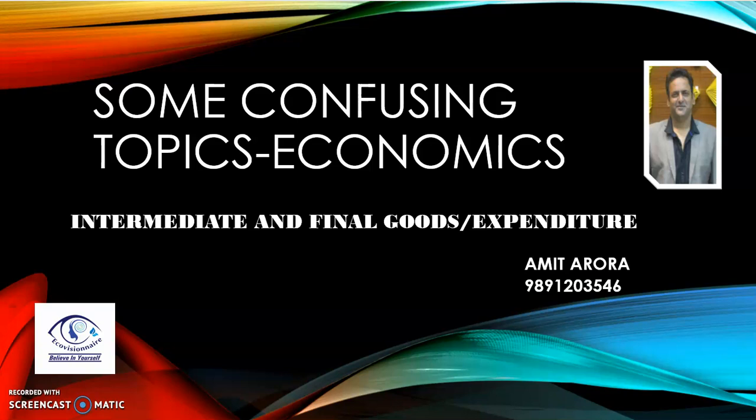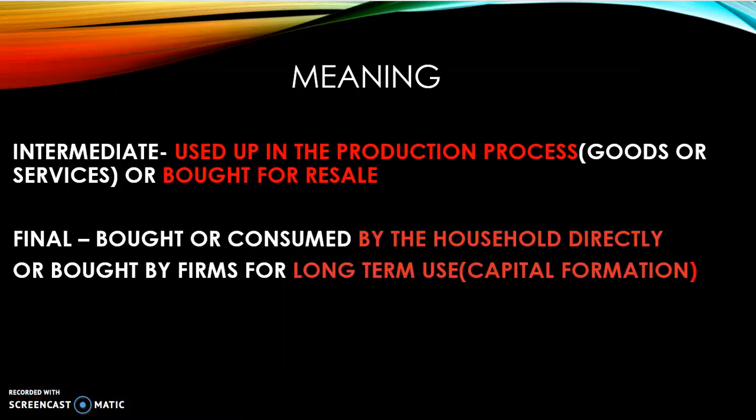Students make errors, and the relevance is that intermediate goods or expenditure we do not add in national income. So if we add it by mistake, then our answer is wrong. Final goods and final expenditures are added in the national income. So let us first understand the meaning and how to identify them.